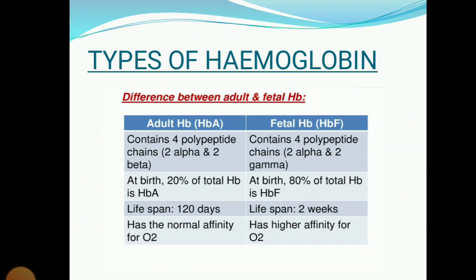Moving on to the types of hemoglobin — from an exam point of view, the difference between adult and fetal hemoglobin is very important. Adult hemoglobin contains four polypeptide chains: two alpha chains and two beta chains. Fetal hemoglobin comprises two alpha chains and two gamma chains. At birth, 20 percent of total hemoglobin is adult hemoglobin, while the remaining 80 percent is fetal hemoglobin.